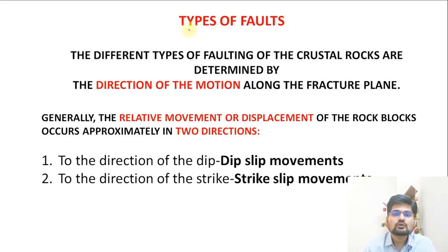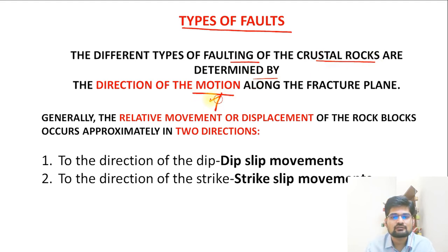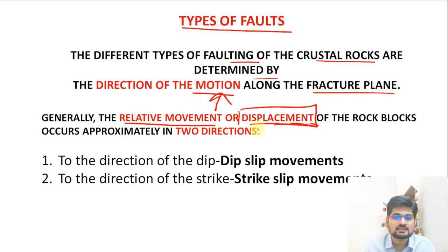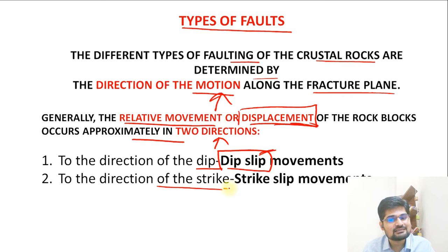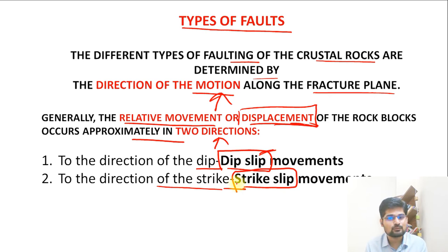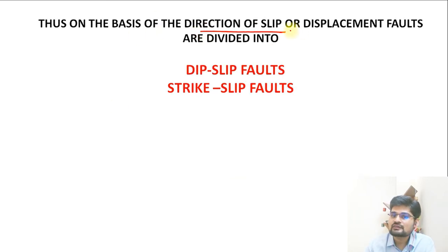The different types of faulting are determined by the direction of motion in the fracture plane. Relative displacement of rock blocks generally occurs in two directions: along the dip — called dip slip movement — or along the strike — called strike slip movement. On the basis of direction of slip or displacement, we have dip slip faults and strike slip faults.